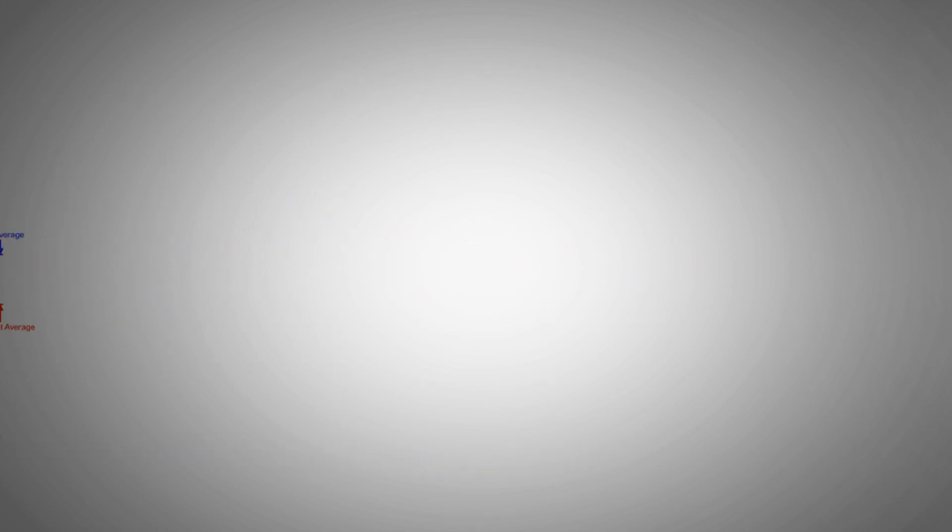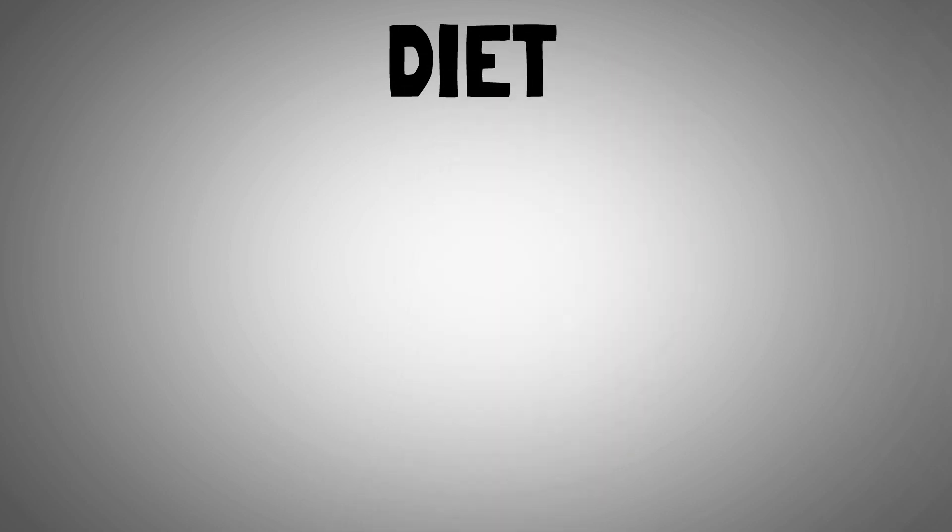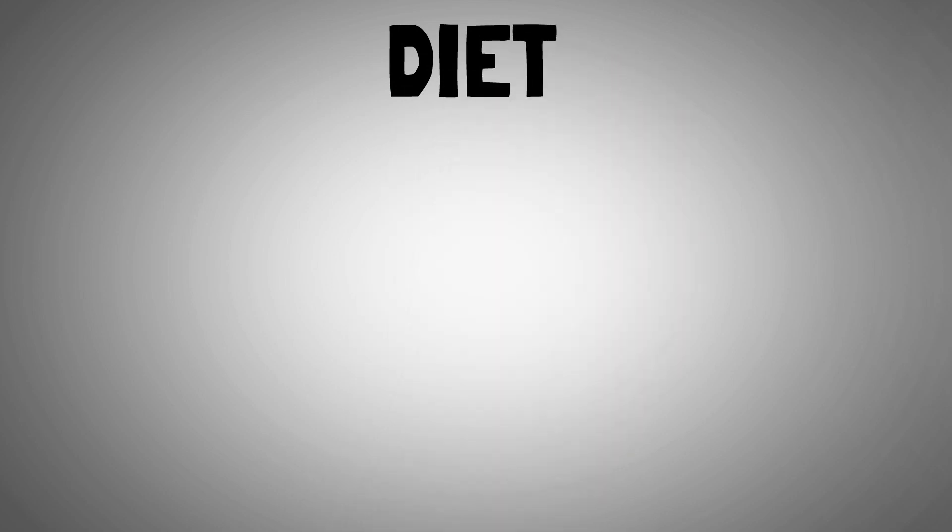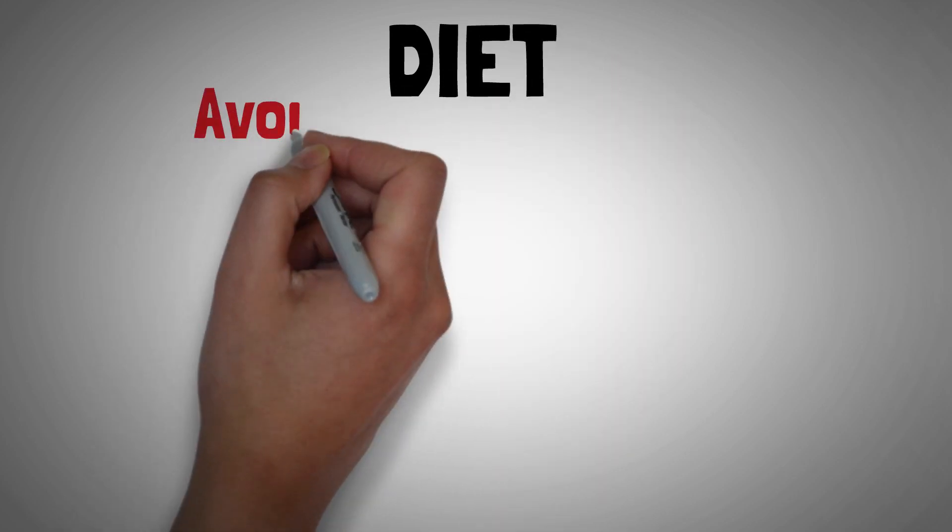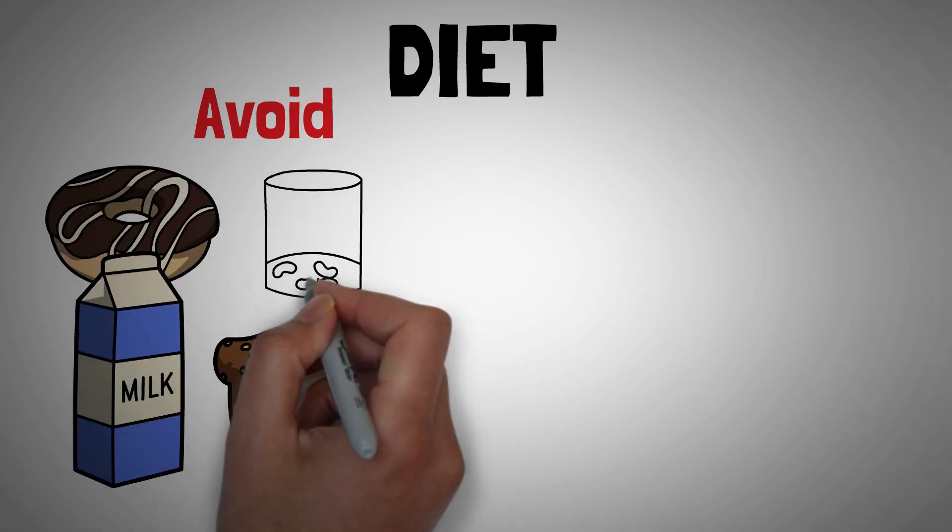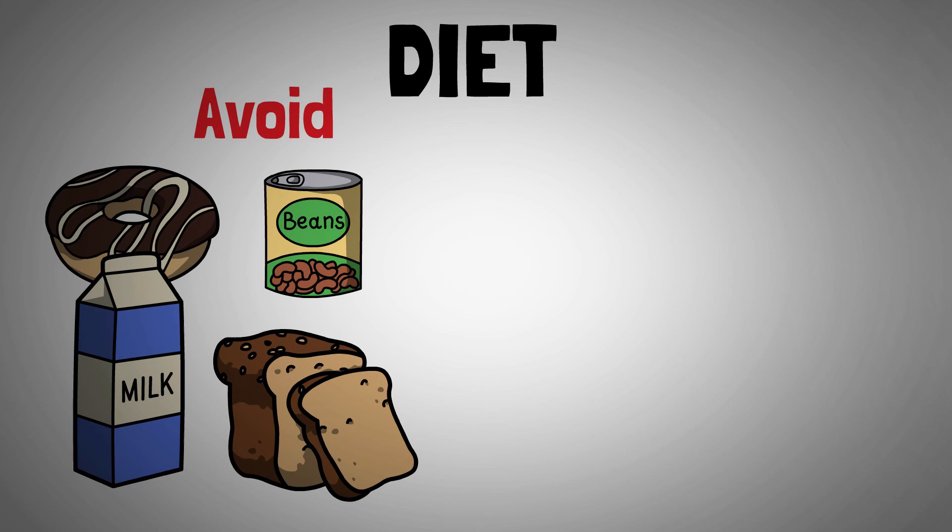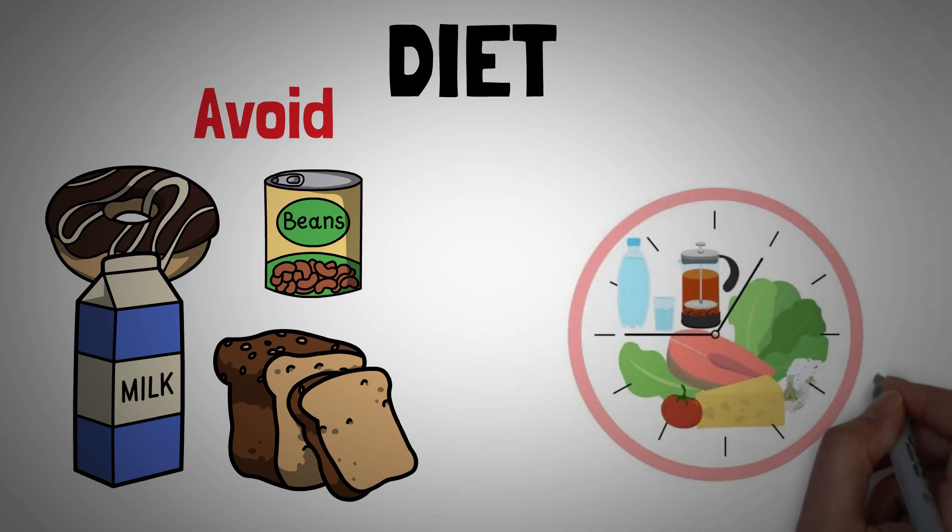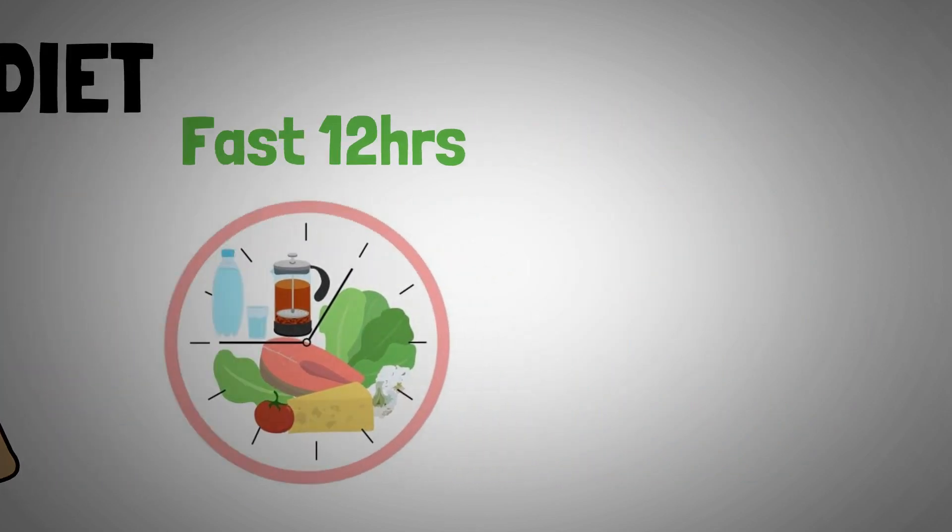So how did they do it? Let's talk about the diet first. Generally, the participants followed a low to moderate carb diet. They avoided sugar, dairy, grains and legumes. They were also only allowed to eat from 7am to 7pm, so they fasted for 12 hours daily. Whatever they ate was supposed to be organic whenever possible.